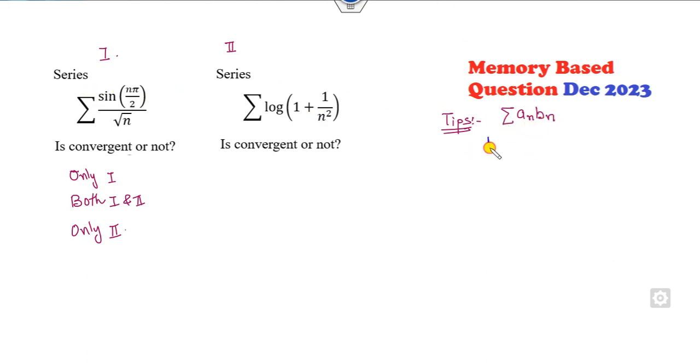What is the property behind that? If you prove that bₙ approaches zero and is decreasing, however aₙ is bounded, if you prove these two properties, then by using the Dirichlet test this series is convergent.